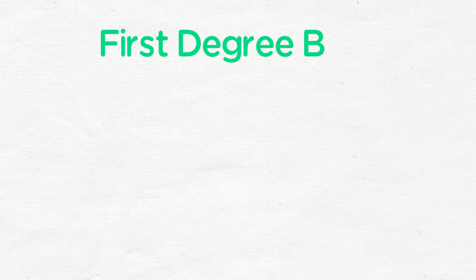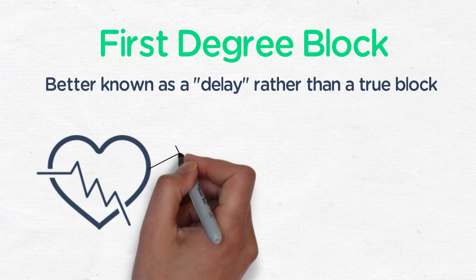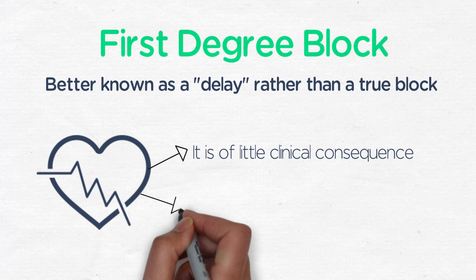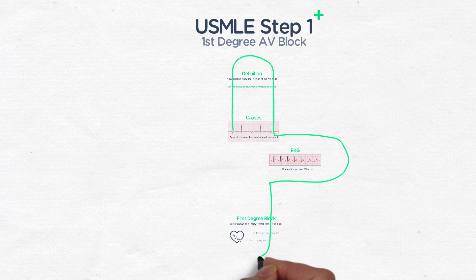First-degree block is better thought of as a delay rather than a true block. It is of little clinical consequence and is not dangerous, but is seen more frequently in aging hearts where the conduction system is starting to slip. You will commonly see it in your clinical practice.